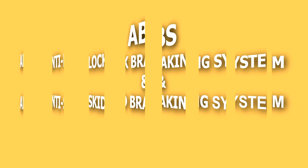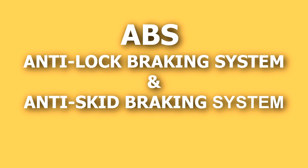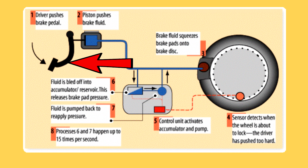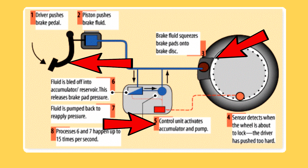ABS stands for Anti-lock Braking System, also known as Anti-skid Braking System. ABS monitors the speed of different wheels — there is a sensor in each wheel that detects skidding and excess pressure buildup. When you apply the brakes, the sensors send a signal to the ABS, and the ABS automatically adjusts the braking force on each individual wheel to prevent skidding and wheel lockup.